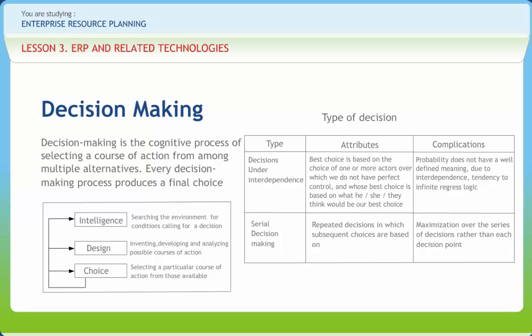Strategic decisions are the highest level, where a decision concerns general direction, long-term goals, philosophies and values. Tactical decisions support strategic decisions; they tend to be medium range, medium significance with moderate consequences. Operational or everyday decisions are used to support tactical decisions; they are often made with little thought and are structured.